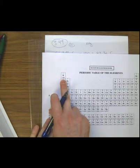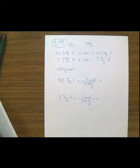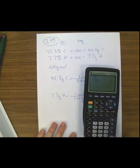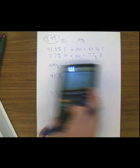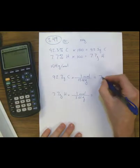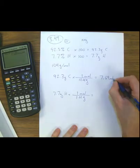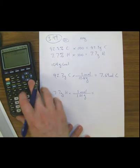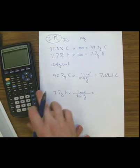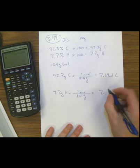I like to use 1.01 for hydrogen and 12.01 for carbon in my calculations. Now I get out my calculator and do the math. 92.3 divided by 12.01 gives 7.69 moles. I'm keeping three significant figures throughout. Then 7.7 grams of hydrogen divided by 1.01 gives 7.62 moles of hydrogen.